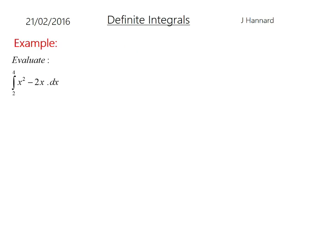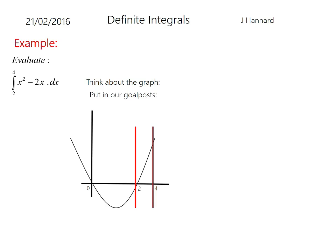But here's the example. Evaluate the integral of x squared minus 2x with respect to dx between 4 and 2. So think about the graph, which is that, and that took me ages to draw. Put up a goalpost, which is at 2 and 4, like that.